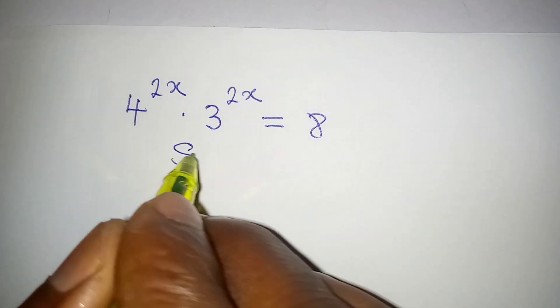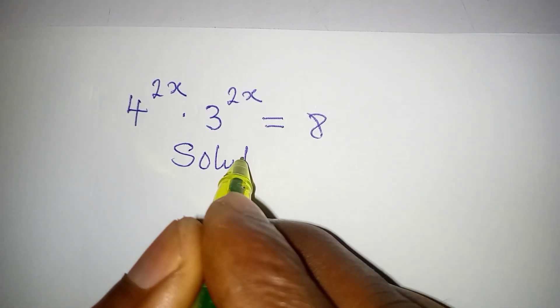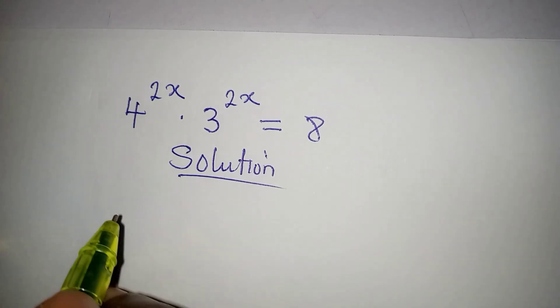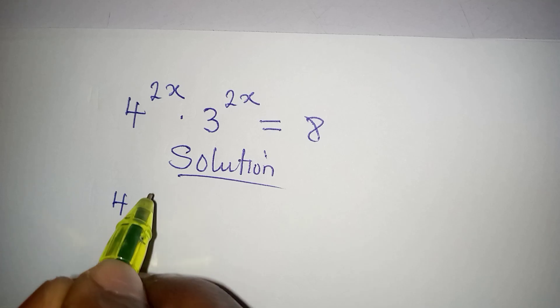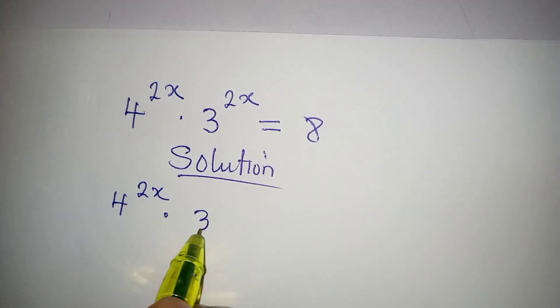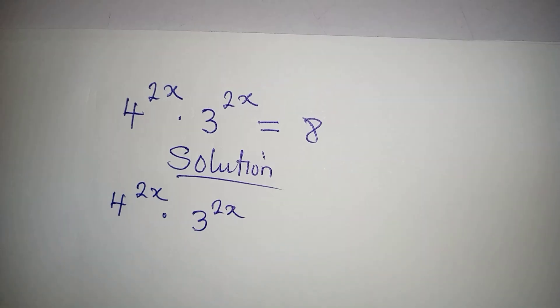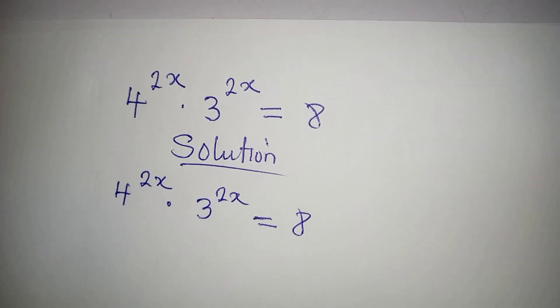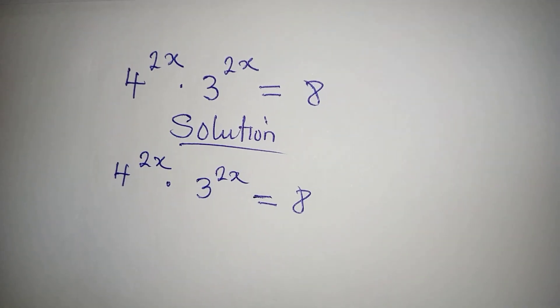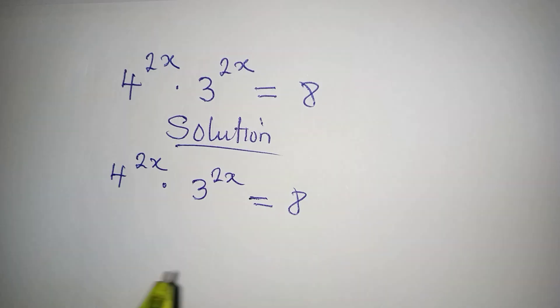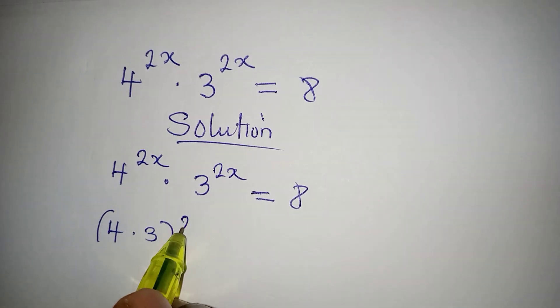Hello everyone, let's provide the solution to this problem: 4 to the power of 2x multiplied by 3 to the power of 2x equals 8. Now this is simple because we have different bases and the same powers, we can have 4 times 3 to the power of 2x equal to 8.